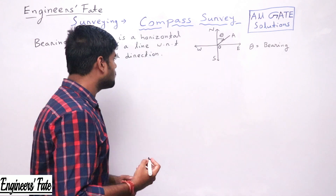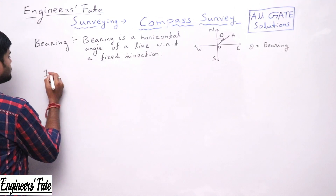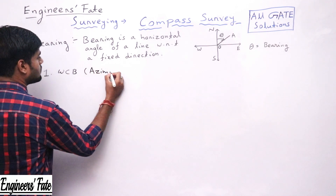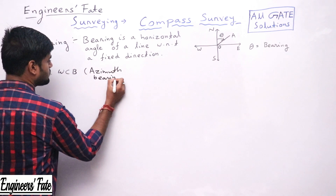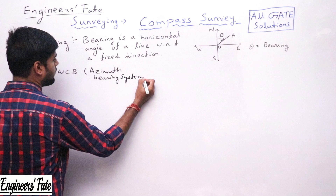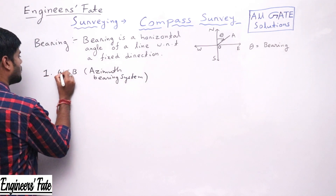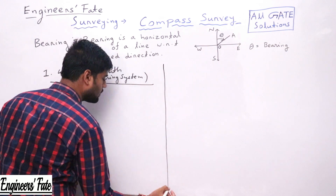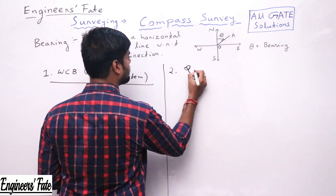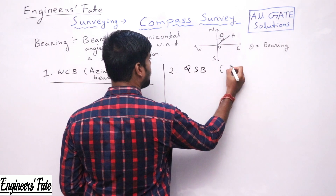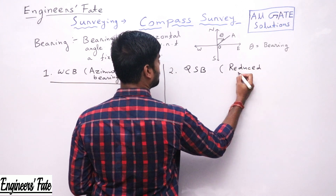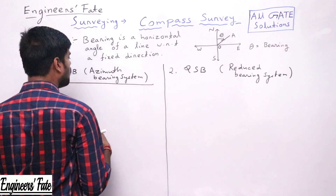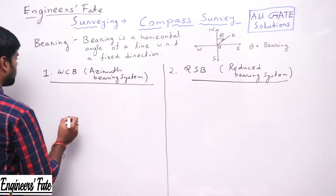Bearing is of two types. The first one is whole circle bearing (WCB), also known as the azimuth bearing system. The second one is the quadrantal system of bearings, also known as the reduced bearing system. So two types: whole circle bearing system and quadrantal system of bearings.